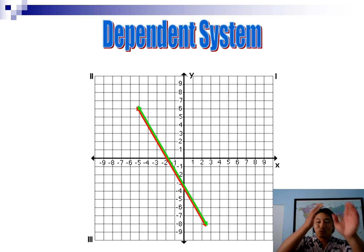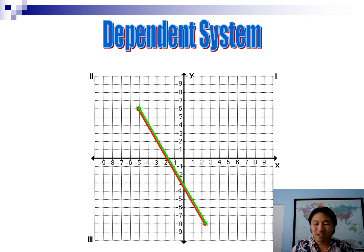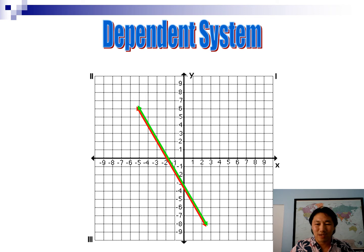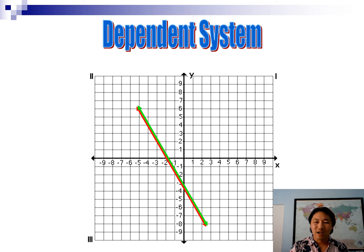When lines are parallel with the same slope but different y-intercepts, we call it an inconsistent system. There's one more case: when the second line falls directly on top of the first line. That means every x and y pair is a solution — the answer is all real numbers — and we call that a dependent system, because one line depends on the other.